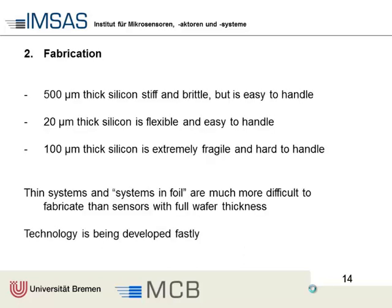Looking into fabrication: silicon wafers at typical 500-micron thickness are easy to handle with given technology. When thinned down to 20 microns, silicon is also easy to handle - it's flexible, smooth, it doesn't break. The problem is in between: 100-micron-thick silicon is troublemaking. It's brittle and it breaks. So it's very difficult to get extremely thin silicon devices.